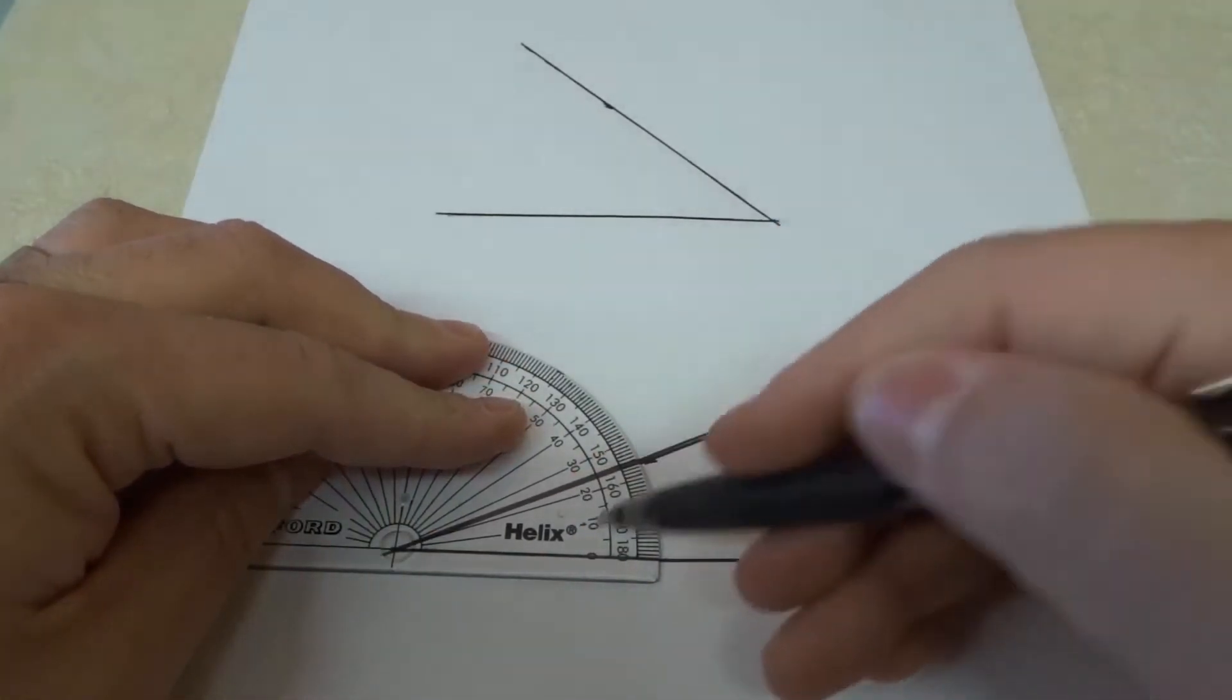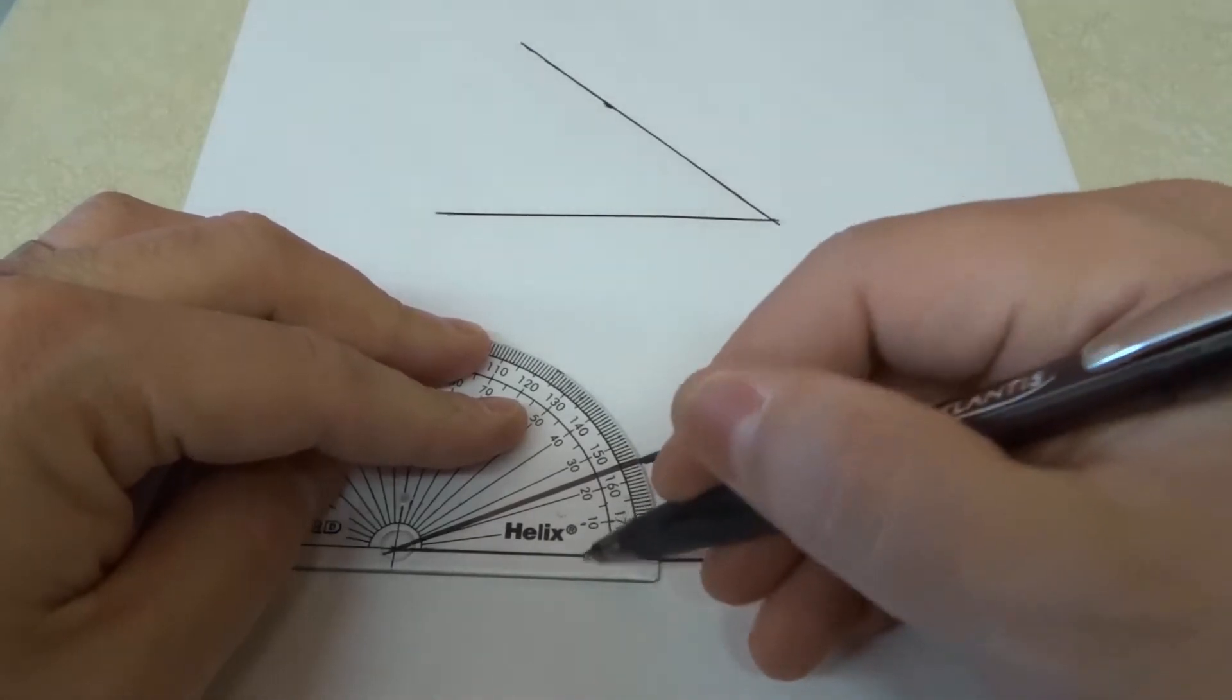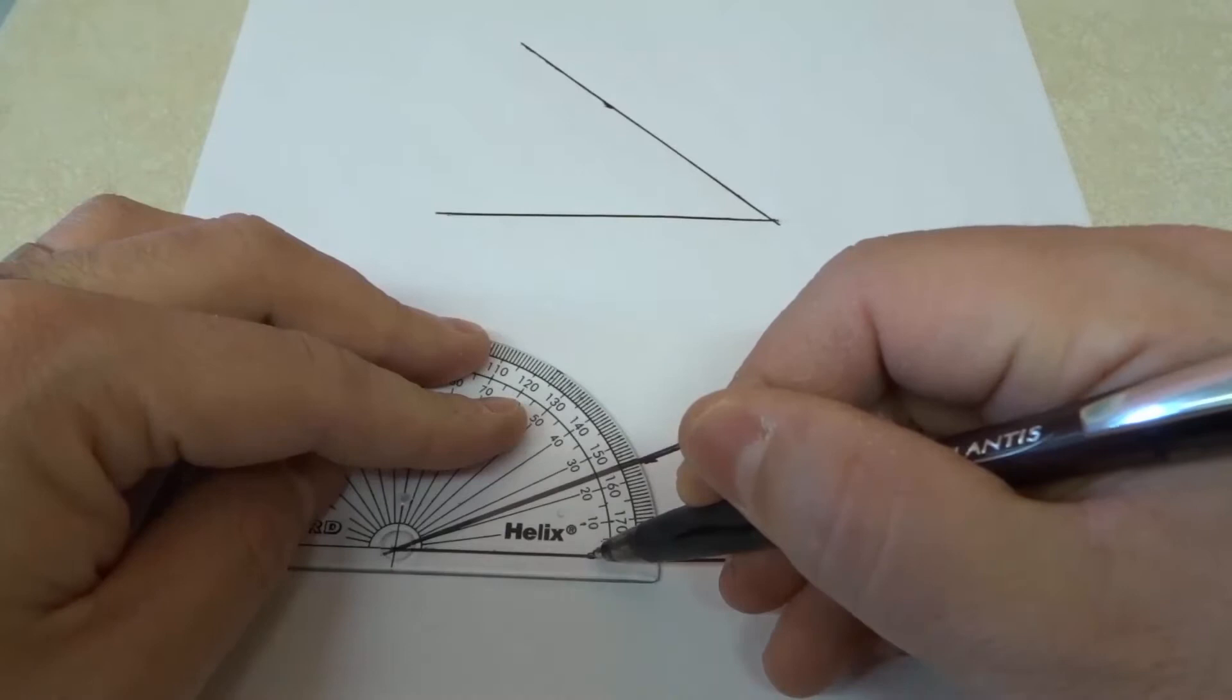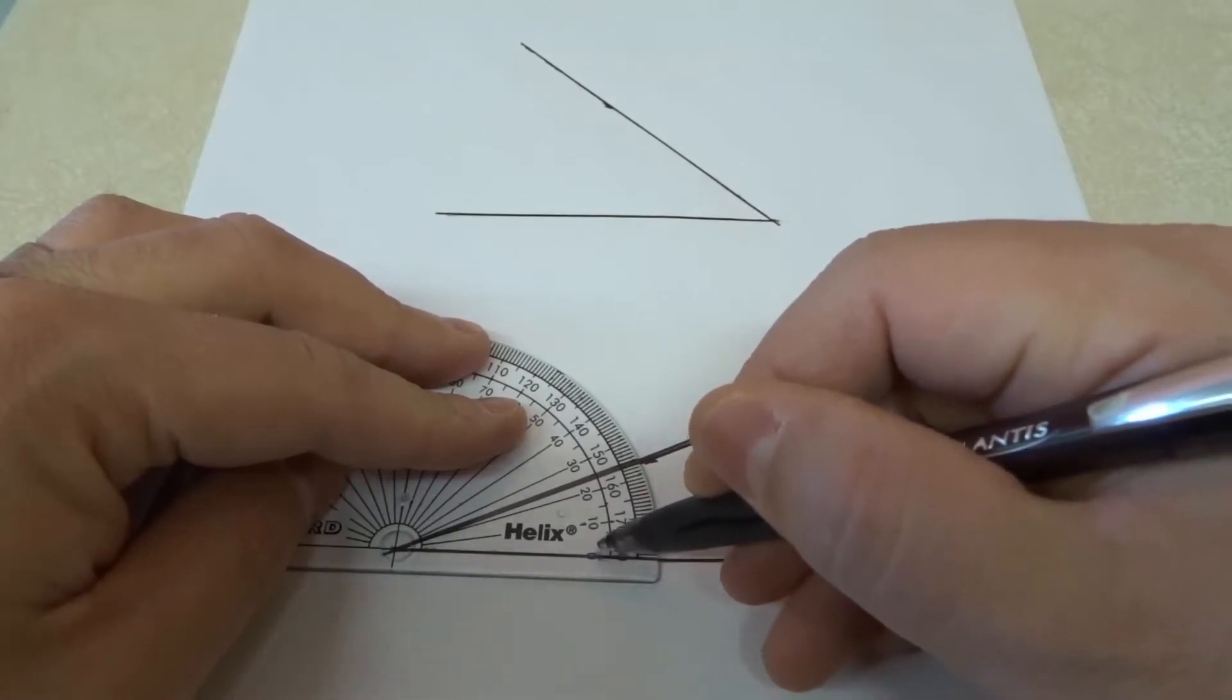And all that we need to do is start at zero. So in order to know whether you're using the inner set of numbers or the outer set of numbers, you're going to start at zero. So we start at zero and zero is actually in the inner set of numbers right here. So we're starting at zero and working our way up.